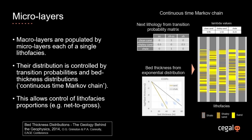The pseudo wells have both a deterministic and a stochastic element. The macro layers are determined deterministically based on the time-depth interpretation, but the population within the macro layers — the micro layering — is stochastic: it will be random and vary from pseudo well to pseudo well.